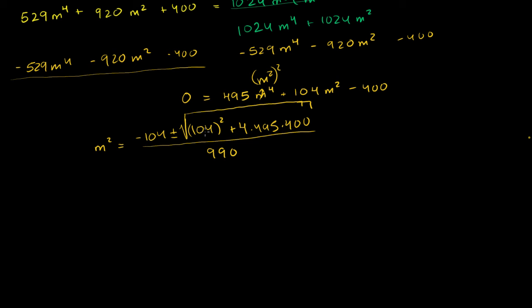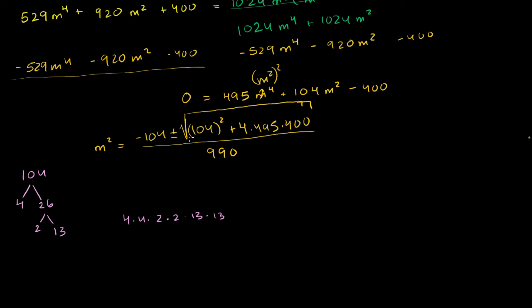Let's just factor 104. I think it'll be useful just to have each of these guys factored. So 104 is the same thing as 4 times 26 — 4 times 25 is 100, so 4 times 26 — which is the same thing as 2 times 13. So that's 104. So 104 squared is going to be 4 times 4 times 2 times 2 times 13 times 13. I squared it, so I put each of its factors twice.